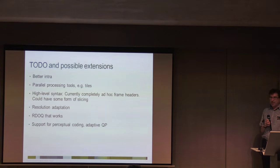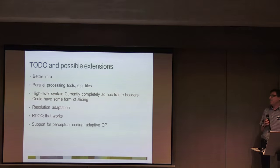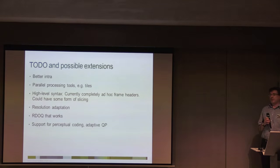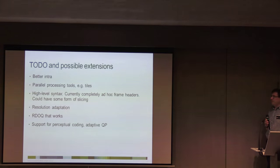We need to think about parallel processing tools. We proposed tiles in H.265, which was picked up in VP9 — it's useful as a general purpose parallelisation tool even though it hits bitrate performance a little. We also don't have any high-level syntax yet — we have ad-hoc frame headers which aren't even byte-aligned — so we need to think more carefully about syntax to avoid getting into trouble.